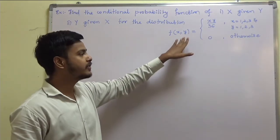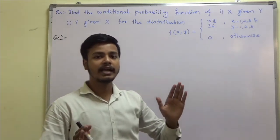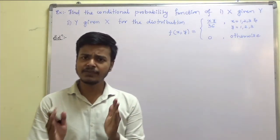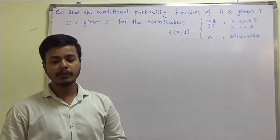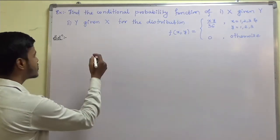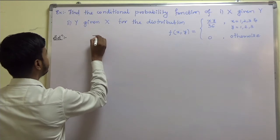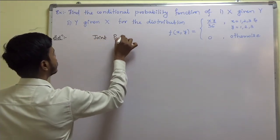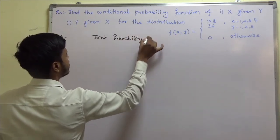Now, with this problem involving a discrete random variable, the very first thing we need to do is make the joint probability table. So without much ado, let us first make the joint probability table.